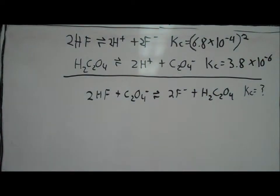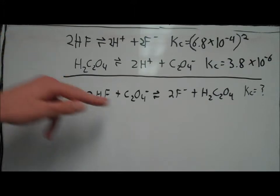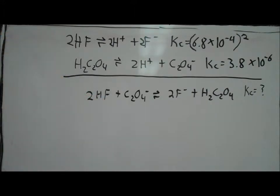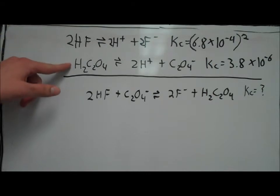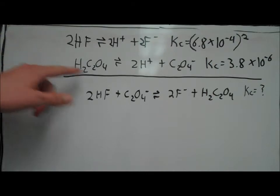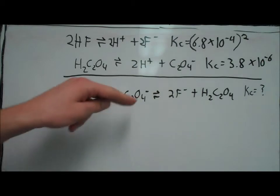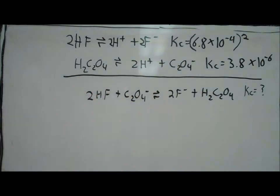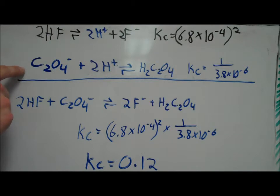Okay, so now that we've done that, we need to look at this equation and see how we can add it to get this. So in order to add both of these equations together, we must reverse this equation to get C2O4- on the left side. Once we've reversed the second equation, we now take the reciprocal of the equilibrium constant value. So that gives us 1 over 3.8 times 10 to the minus 6.